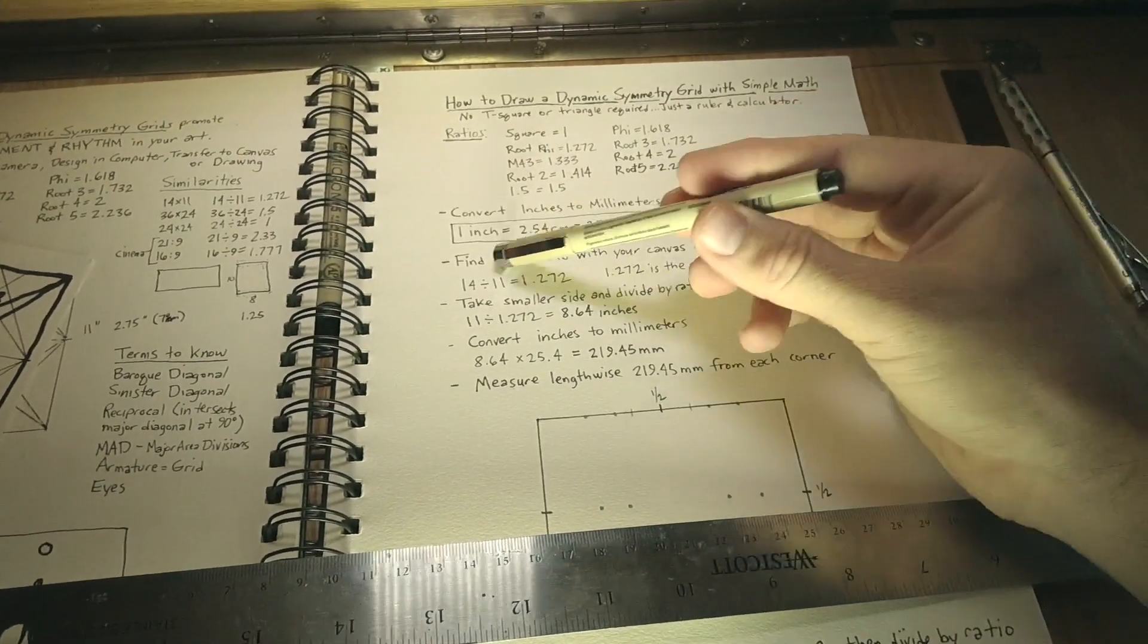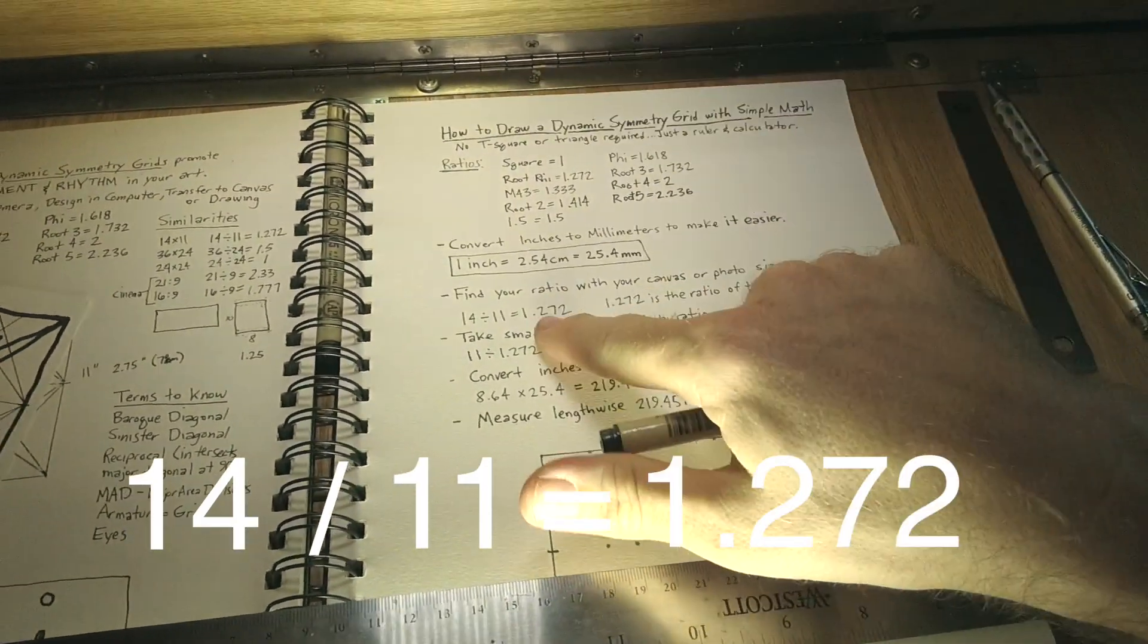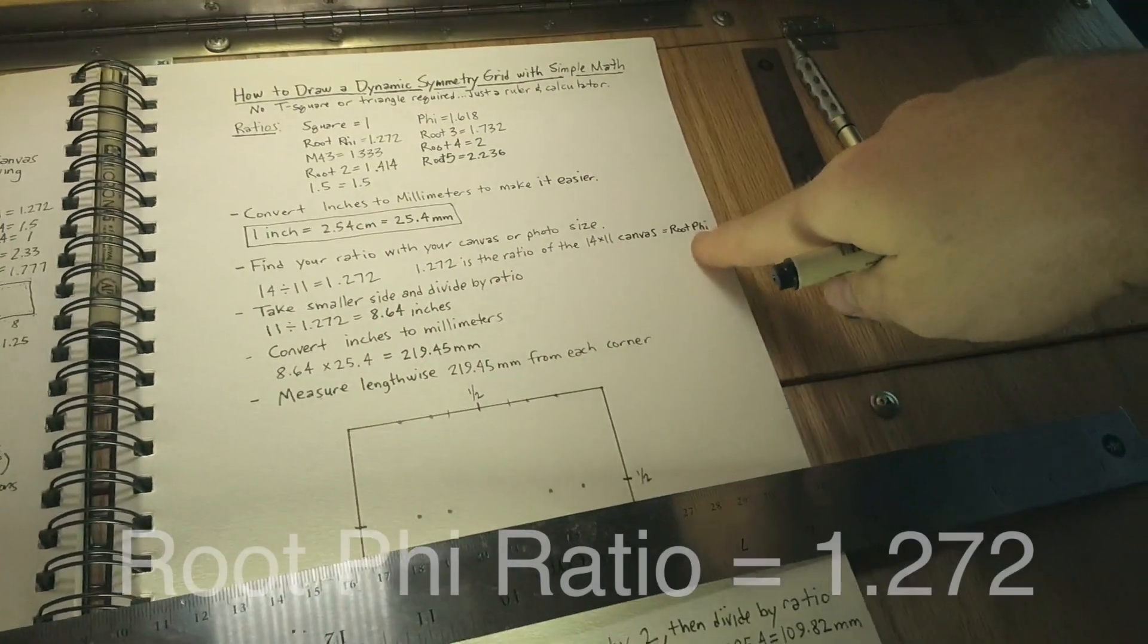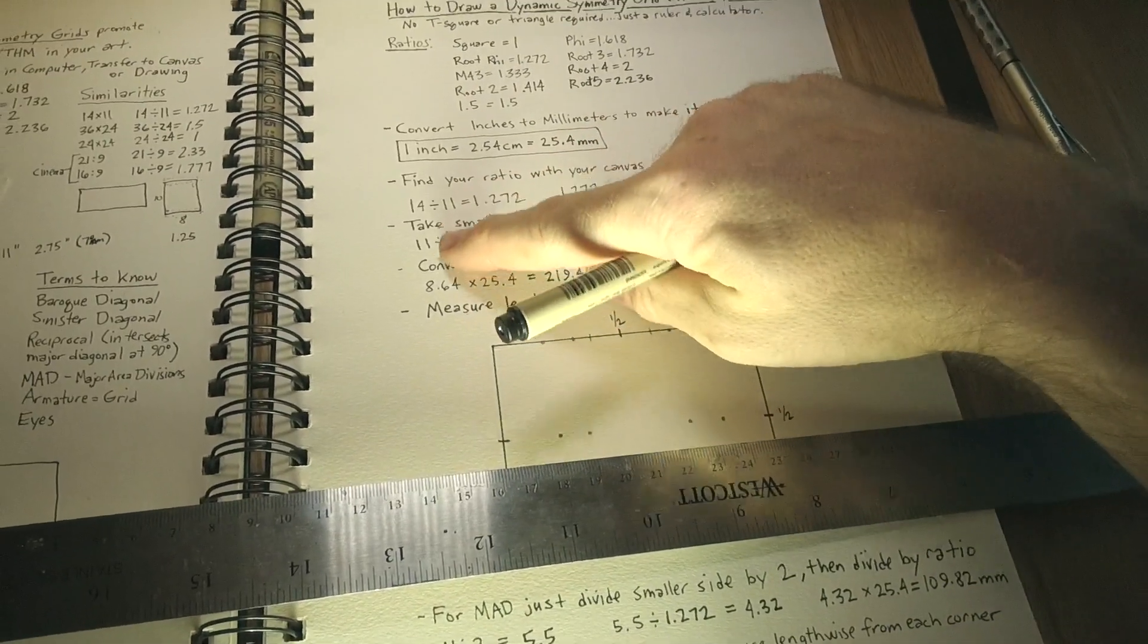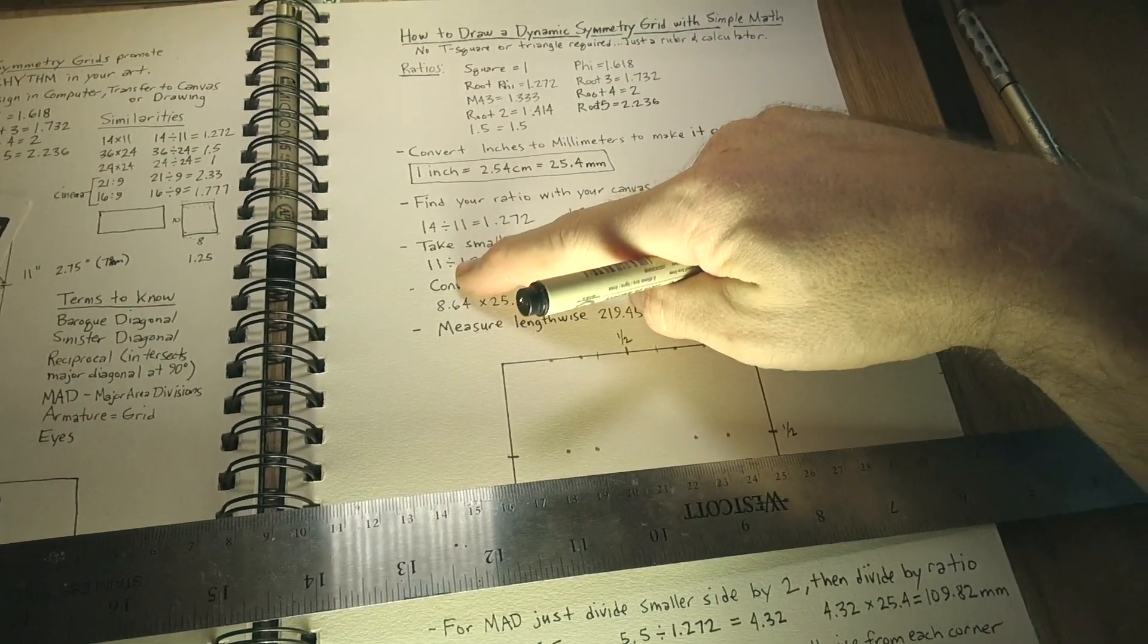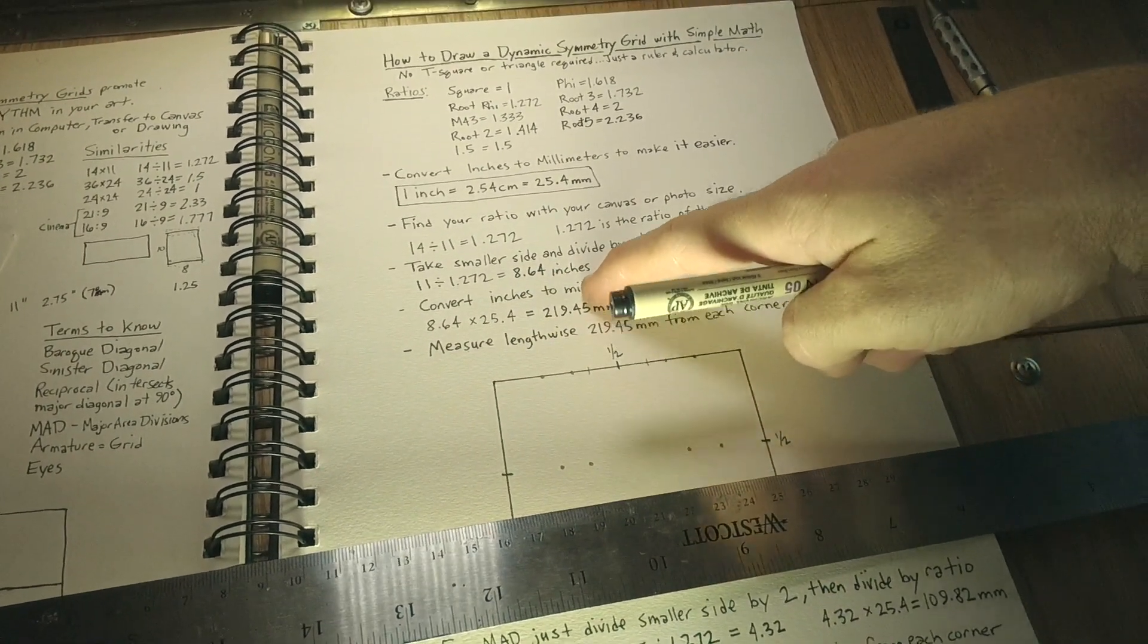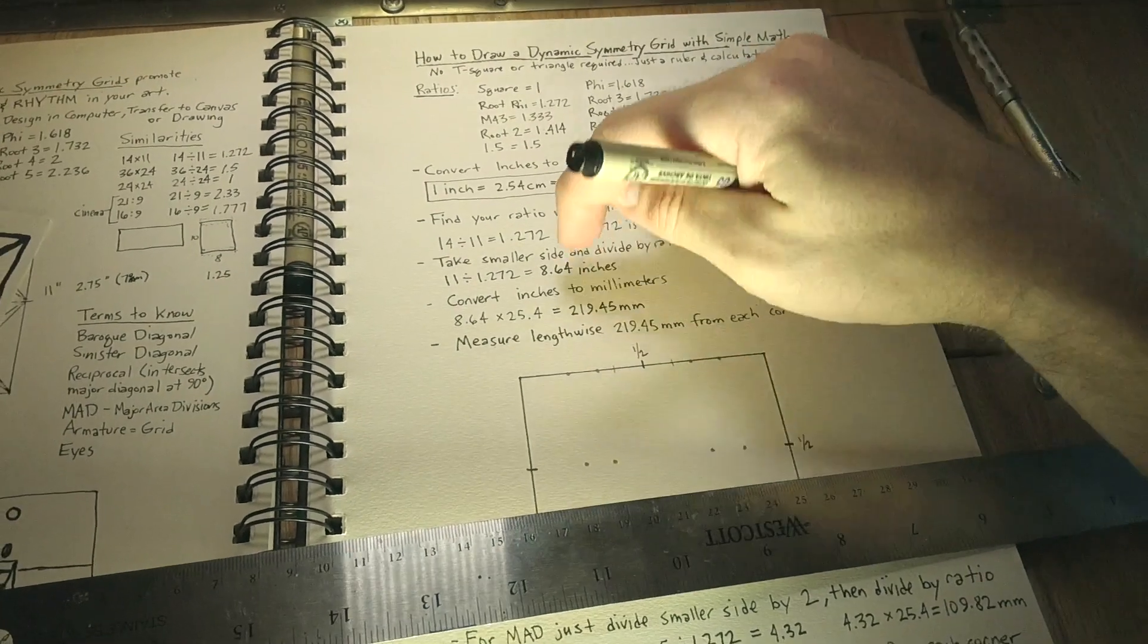So to find our ratio, we just divide the larger number by the smaller number and we get our ratio. Okay, so the 14 by 11 is actually a root 5 because the ratio is the same exact as the root 5 up here. And then we take the smaller side, which is 11, and we divide that by the ratio and we get 8.64 inches. So this is the number that's going to give you your right angle of measurement.